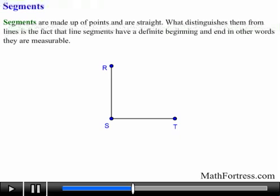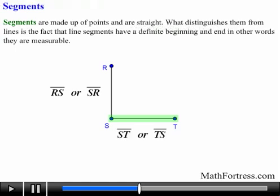Also notice that a segment is named in terms of its two endpoints, because a segment has a definite beginning and end. The figure in the middle contains two line segments. The vertical, up and down segment can be called RS or segment SR.